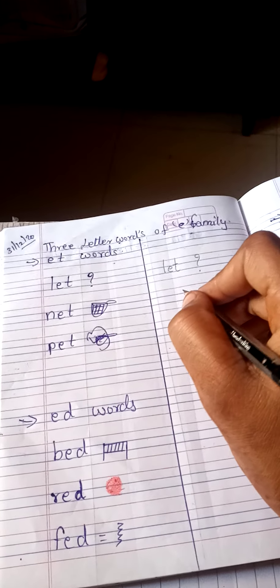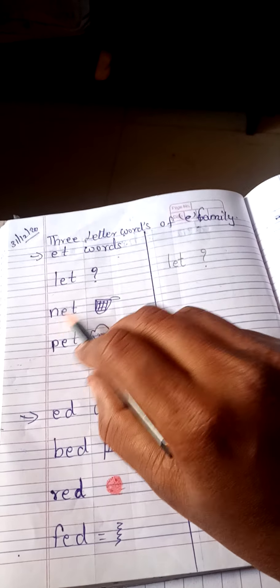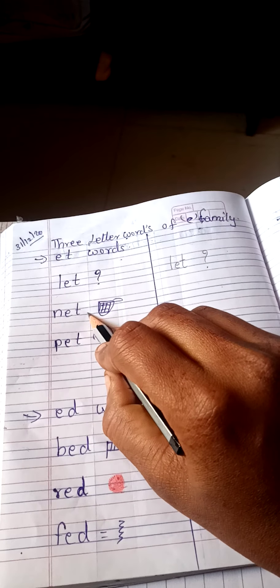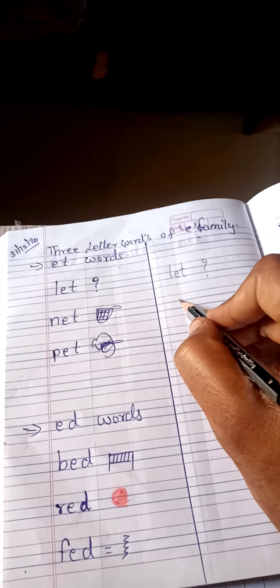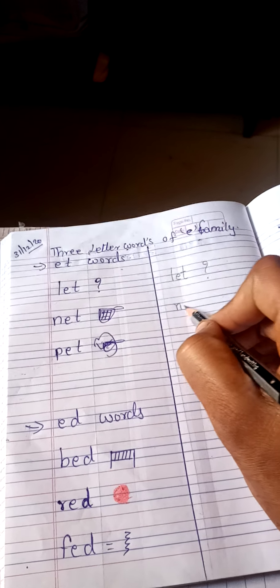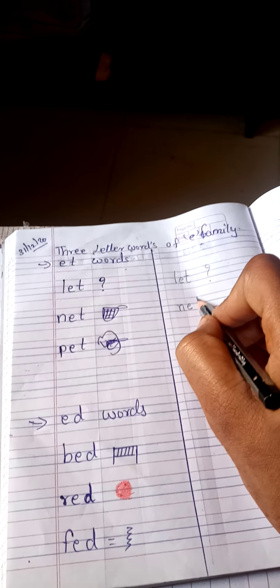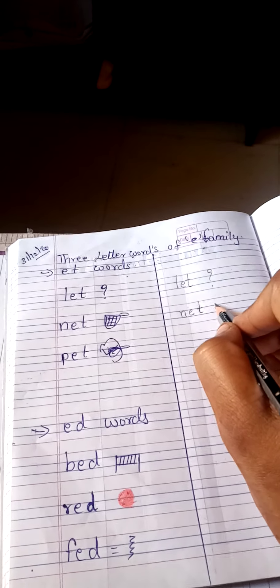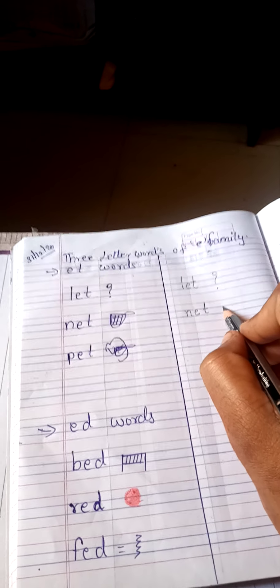Now next, N-E-T, net. So write down net, N-E-T, net. We are going to draw the net. Okay, what is this? This is the net.